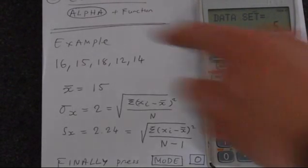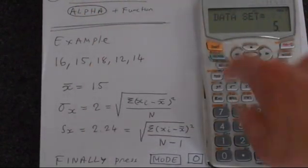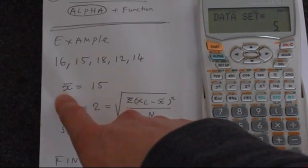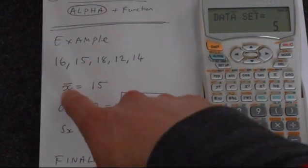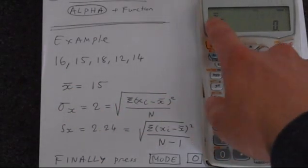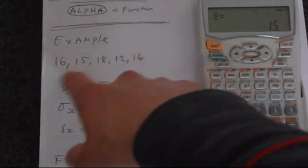Now let's do the calculations. As it says up here, alpha and then the function. We're wanting the average to start with. This is x bar, or rather the mean. So press alpha and then 4. That puts x bar up here. Press equals and it calculates it and we get 15, which is what you expect if you sum those numbers and divide it by 5.